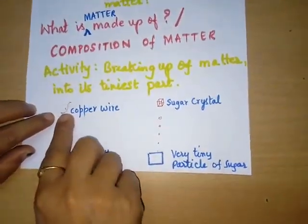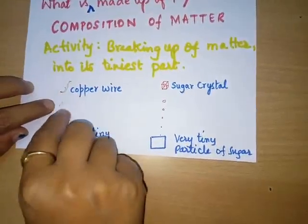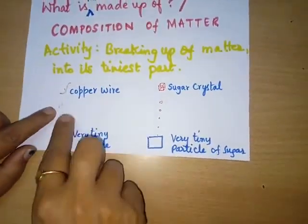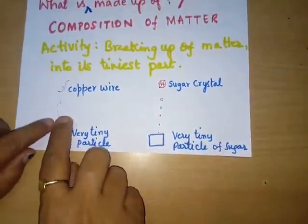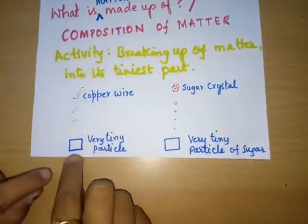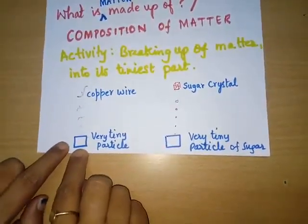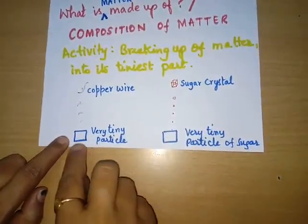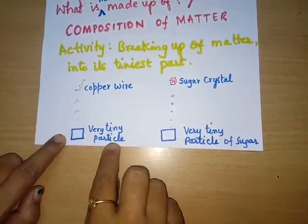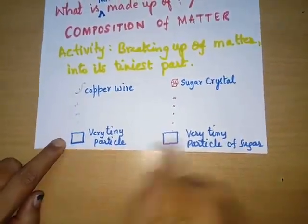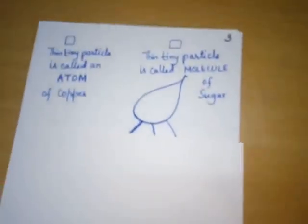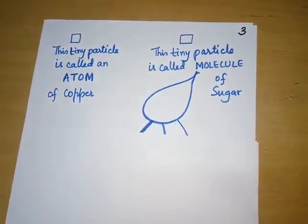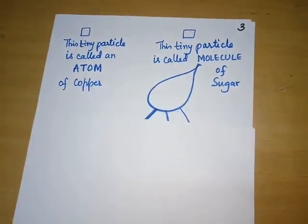I take a small piece of copper wire. I cut it down and get a smaller size copper wire. I again cut it down — still smaller size. The size keeps decreasing as I cut it down, and I finally reach a stage where that part is very, very tiny. It is from the copper only, and it's very tiny. This tiny particle is called an atom. Since it is obtained from copper, I call it an atom of copper.